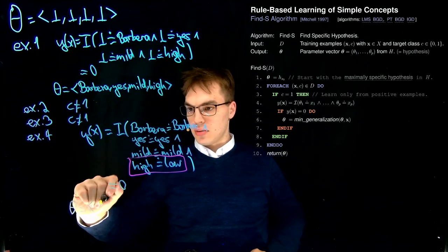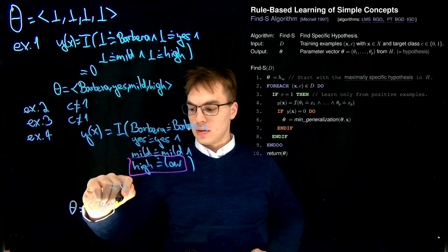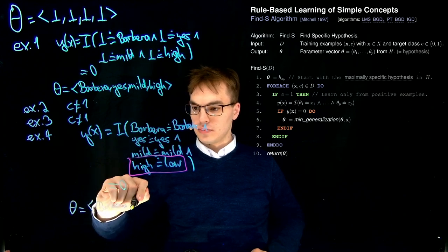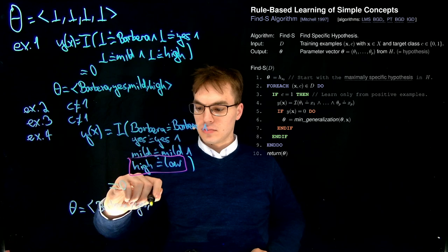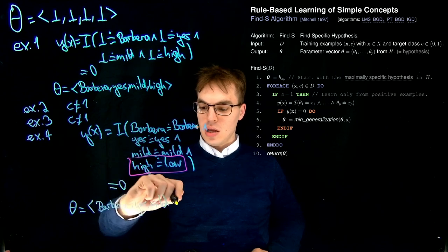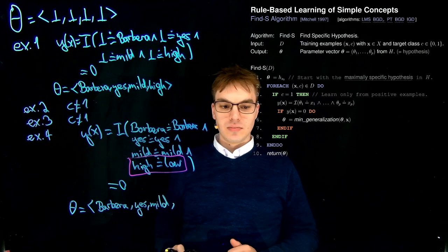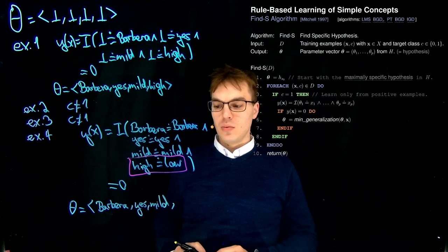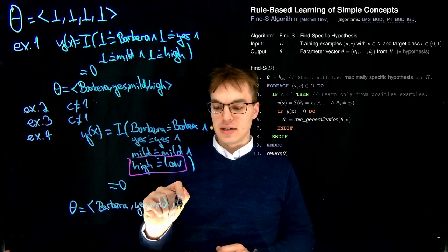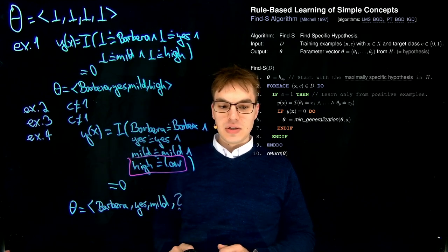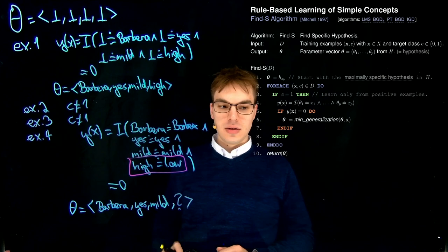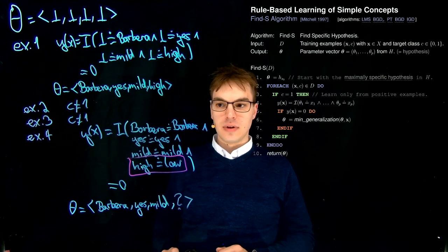For these values this is very easy, because we can still just copy them. But for this value, in order to match both of them, we have to generalize, and this means adding a wildcard over here, a question mark, and then we're done. This is our final result.